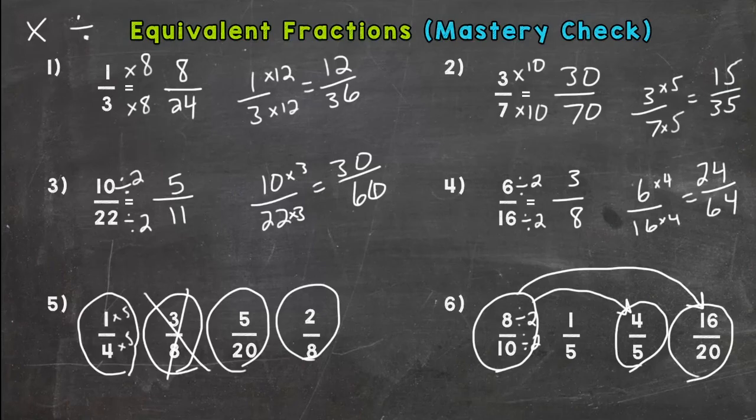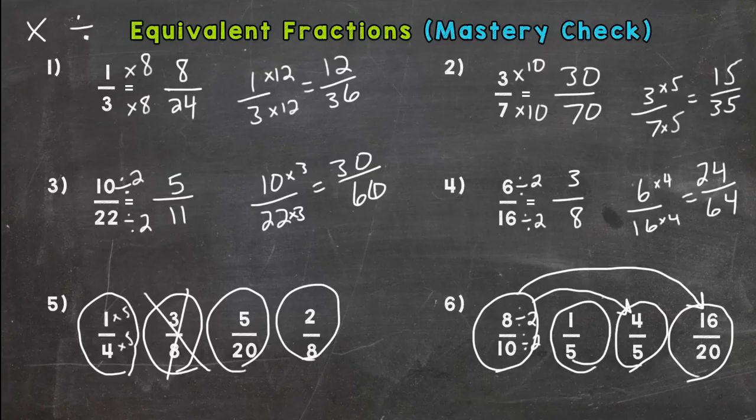There are multiple ways to do number five and six. So if you didn't come to the correct answer just like I did, that's fine, as long as you got to the correct answer. 1/5th is the fraction that does not fit there. The odd man out.